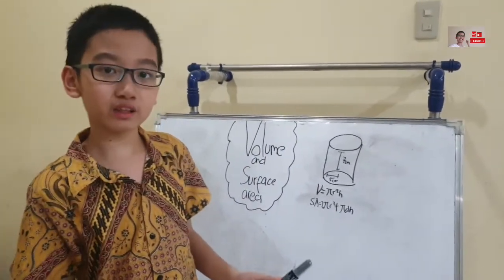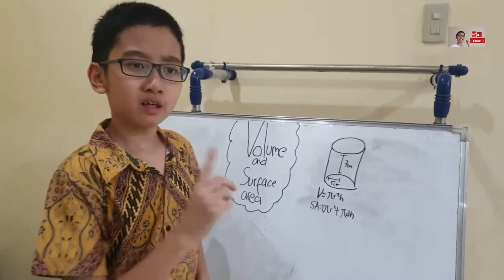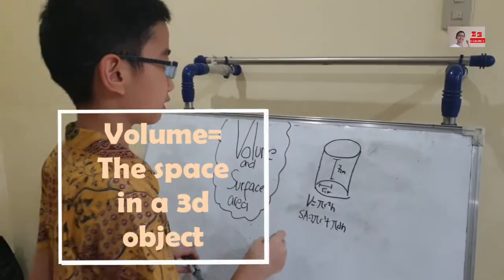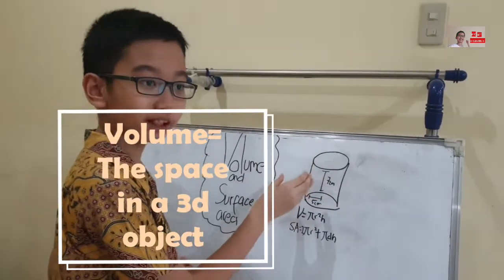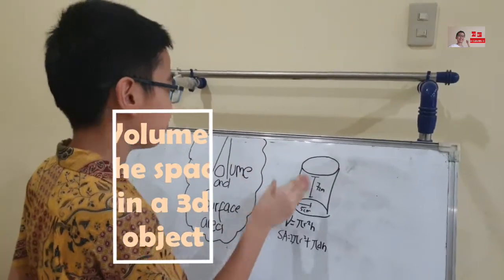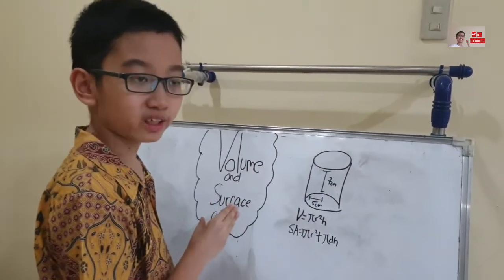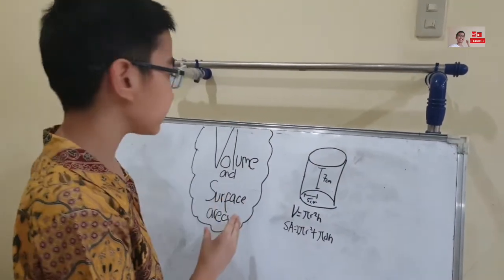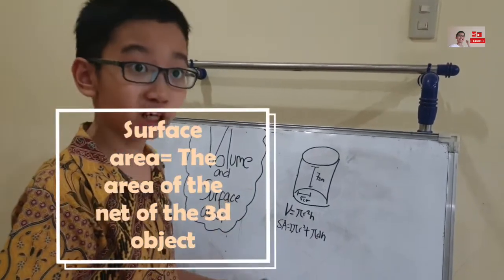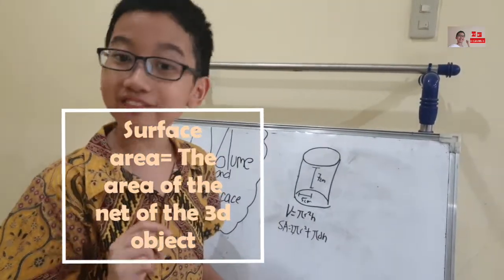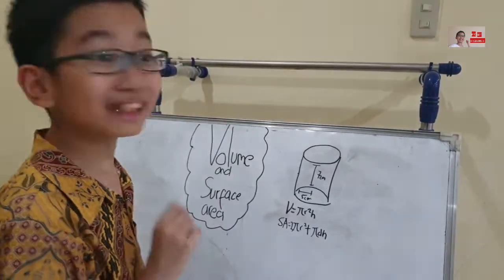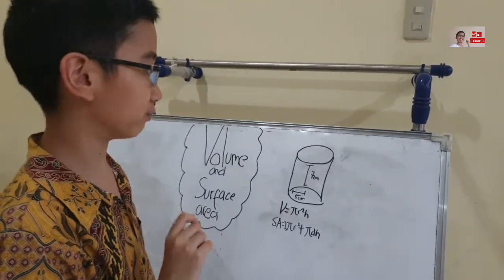What is volume, friends? Volume is the inside of a 3D object — it's the space in a 3D object. And for the surface area, the surface area is the area of the net of a 3D object. Okay, let's try to solve one of them.